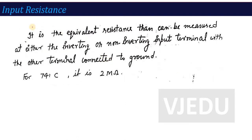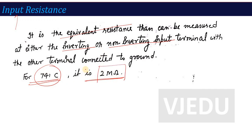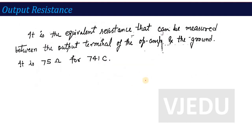The next characteristic is input resistance. Input resistance is defined as the equivalent resistance that can be measured at either the inverting or non-inverting input terminal with respect to the other terminal connected to ground. As per the data sheet of the 741 IC, this input impedance is 2 mega ohm, that is 2×10⁶ ohm. There is also output resistance — the equivalent resistance measured between the output terminal of the op-amp and ground. For the 741 IC, output resistance is equal to 75 ohm. So output resistance is small and input resistance is large — this is the basic tendency of the op-amp.